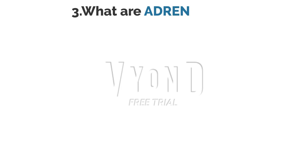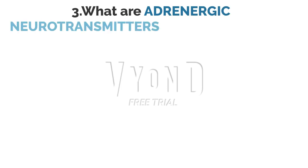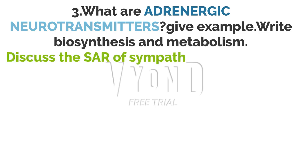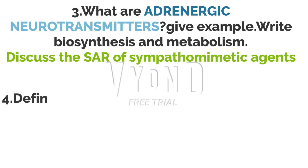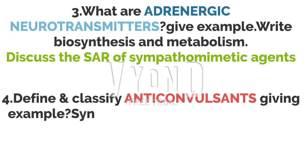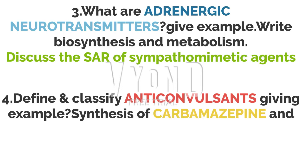Third question: What are adrenergic neurotransmitters? Give examples, write biosynthesis and metabolism, and discuss the SAR of sympathomimetic agents — including norepinephrine and epinephrine. Fourth question: Define and classify anti-convulsants with examples, and synthesize carbamazepine and phenytoin.